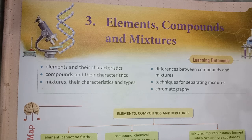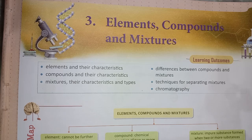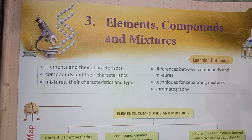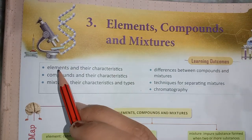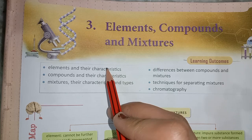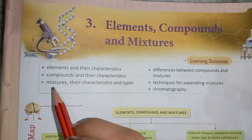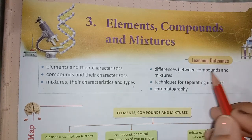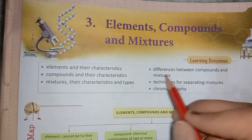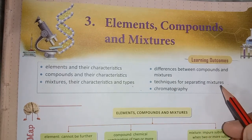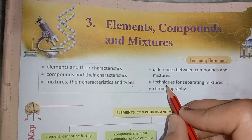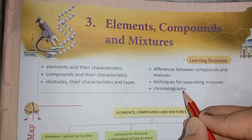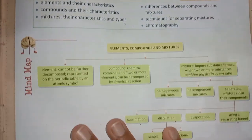Let's start today's lecture. This chapter is very basic — it will create a base of chemistry, so study it well. We will cover it slowly and in parts. In this chapter we will study elements and their characteristics, compounds and their characteristics, types and characteristics of mixtures, differences between compounds and mixtures, techniques for separating mixtures, chromatography, and differences between elements and compounds. Now let's see the mind map.